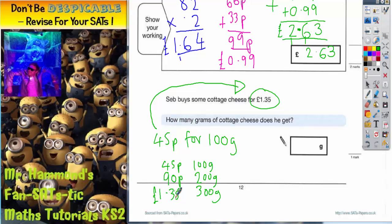As you can see, we've got three lots of 45p, so we've got three lots of 100 grams. So the final answer is 300 grams. For £1.35 he can buy 300 grams of cottage cheese, and that's the cheese question finished.